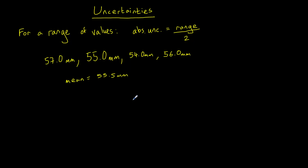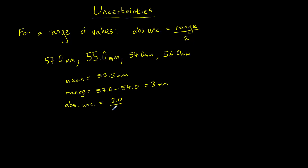But what's the uncertainty in that? Well, we need to find the range of these values. The largest value is 57.0 and the smallest is 54.0, giving us a range of 3 millimetres. To calculate the absolute uncertainty we divide the range by 2, so the absolute uncertainty equals 3.0 divided by 2, which is 1.5 millimetres. So the mean is correctly written as 55.5 ± 1.5 millimetres.